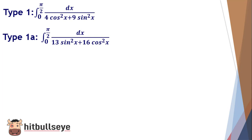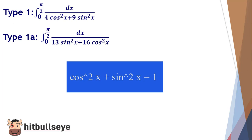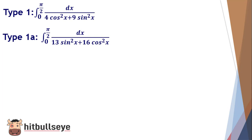We will see this format question. You always know the identity cos²x + sin²x = 1. If you have this identity, you can directly answer this question. π/12 is the answer for the first type, and for the second type the answer would be π/(8√13).